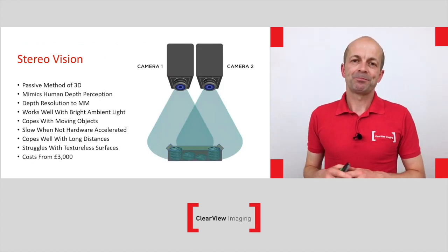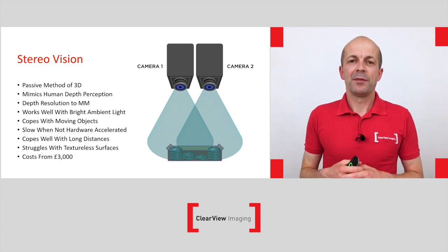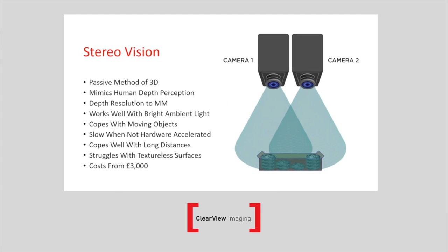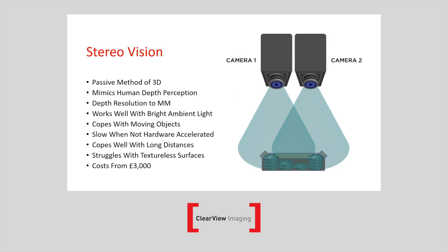So if we start with stereo vision. Stereo vision uses two cameras, very similar to humans having two eyes — it mimics human depth perception. The technology itself is a passive method of 3D. When we refer to passive, it means the technology is not using a built-in laser, light source, or projector to project light onto the scene to gather 3D information. That is one of stereo vision's strengths.